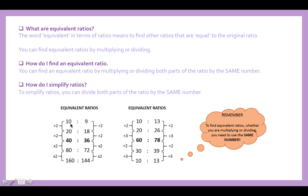Let's look at some examples. Say we start with 10 to 9. For an equivalent ratio going higher, you could times it by two to get 20 to 18 — exactly the same ratio, just bigger numbers. This is also the same as 40 to 36, and 80 to 72. You've just doubled the previous ratio each time, but it still represents the same equivalent ratio.